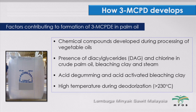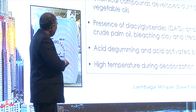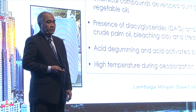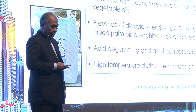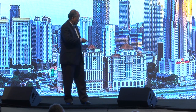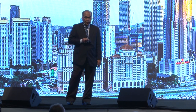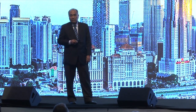How does 3MCPD develop? Factors contributing to the formation of 3MCPD in palm oil: the chemical compound develops during the process of vegetable oil refining. The presence of diacylglycerides (DAG) and chlorine — the key word is chlorine — including from palm oil, bleaching clay, and steam, is important. If you use tap water and so on, you always have chlorine in them. Other factors include acid degumming, acid-activated bleaching clay, and high temperature. All of these are controllable items.